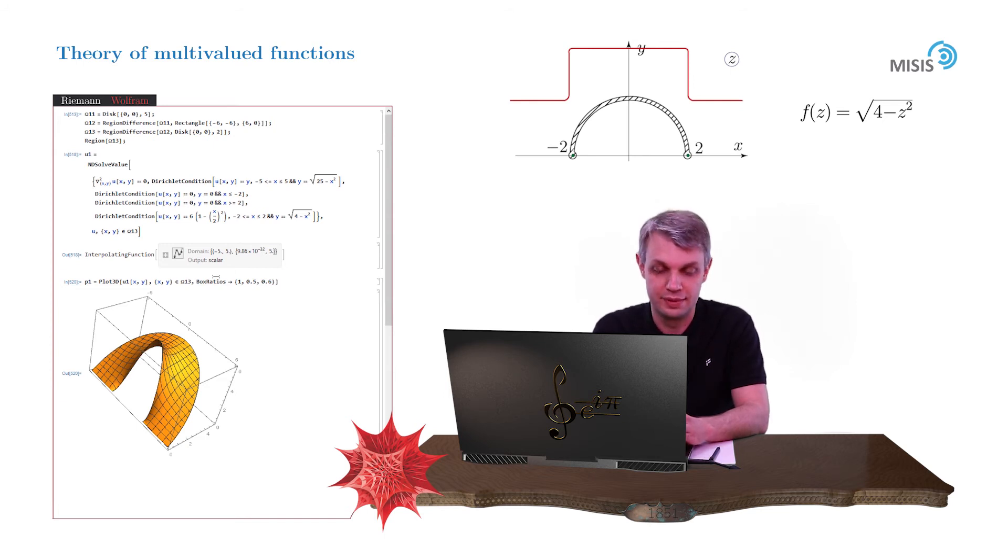Now let's build the lower half. And the lower half is built in a similar manner. The only difference is that we'll have to deal with lower semi-disc, and we'll have to change slightly the boundary conditions. So let's do this.